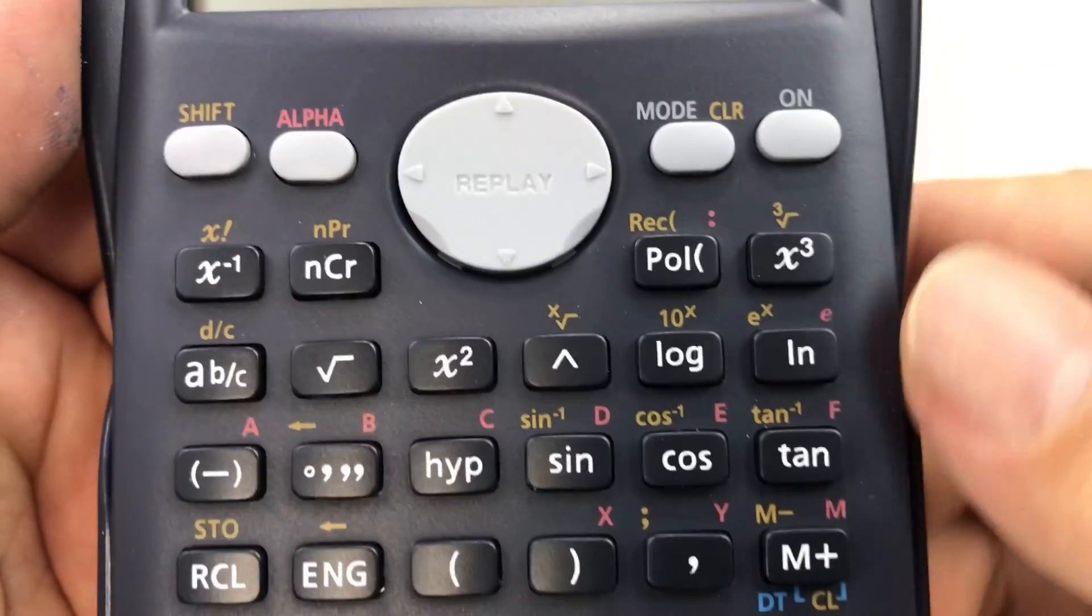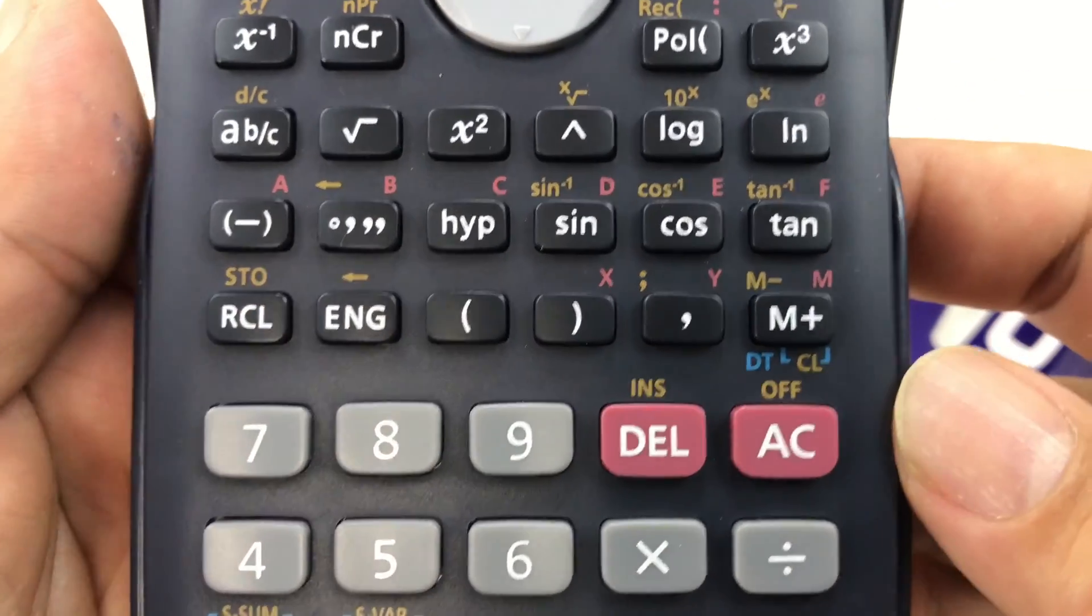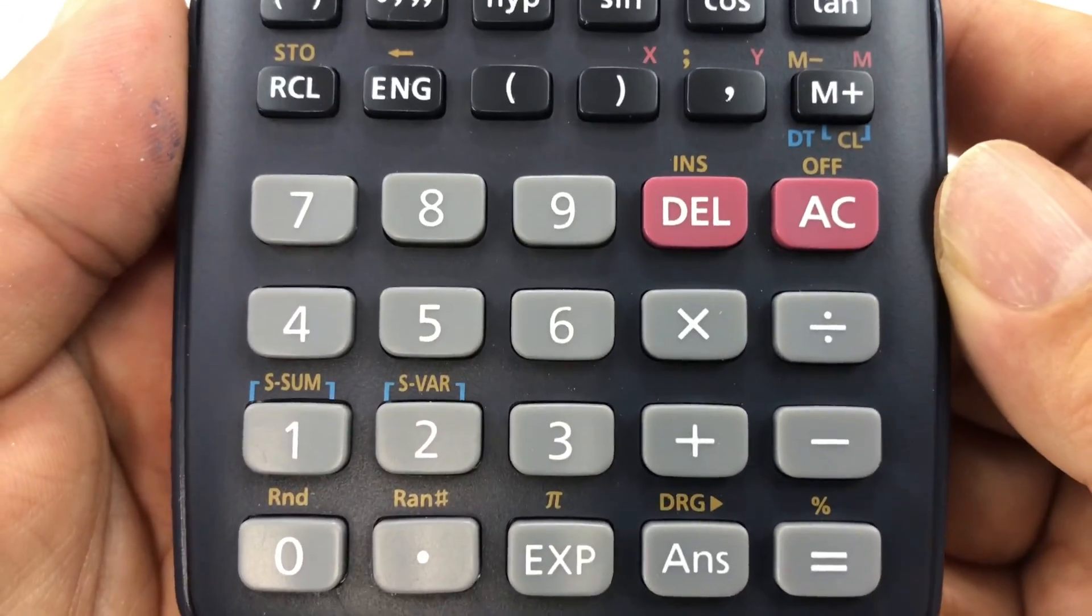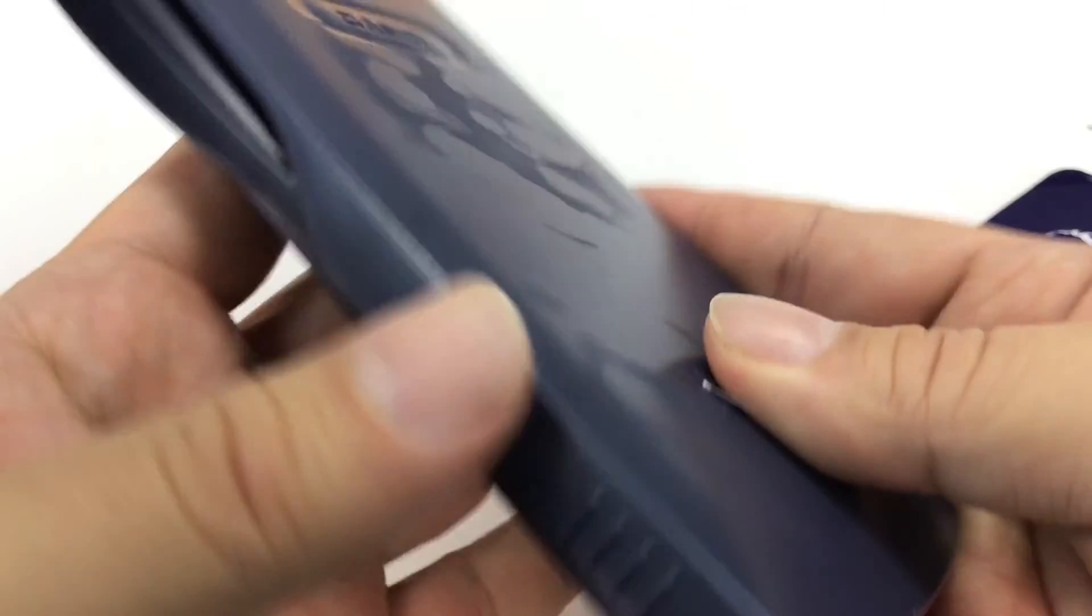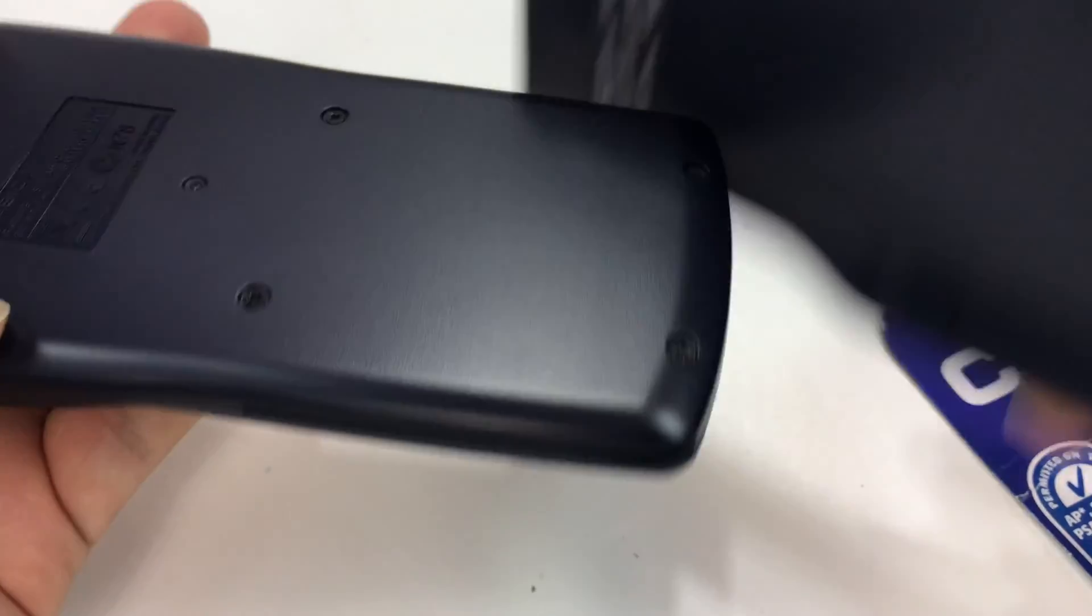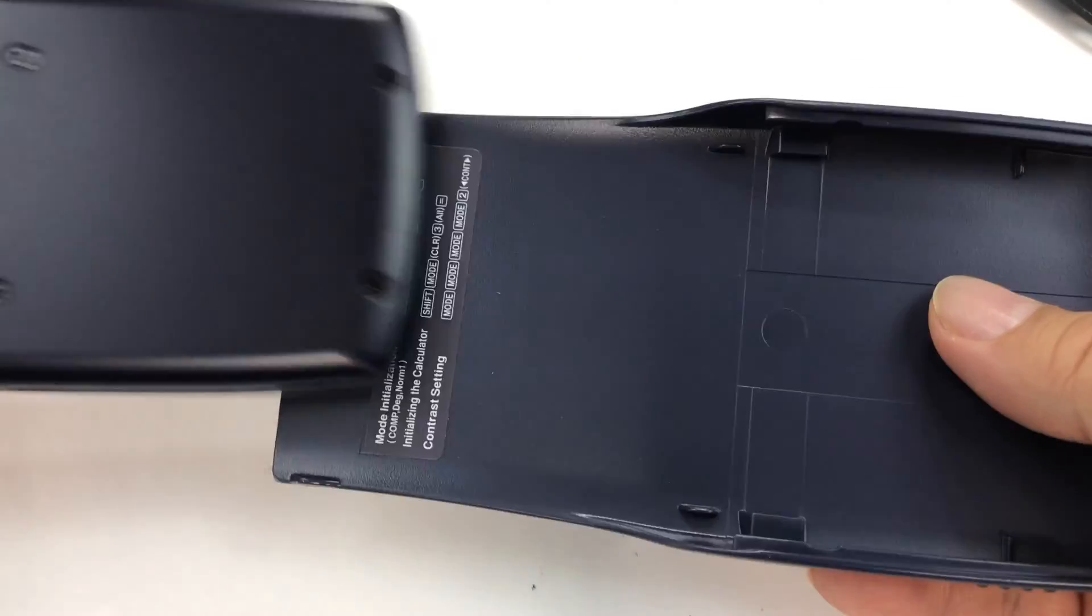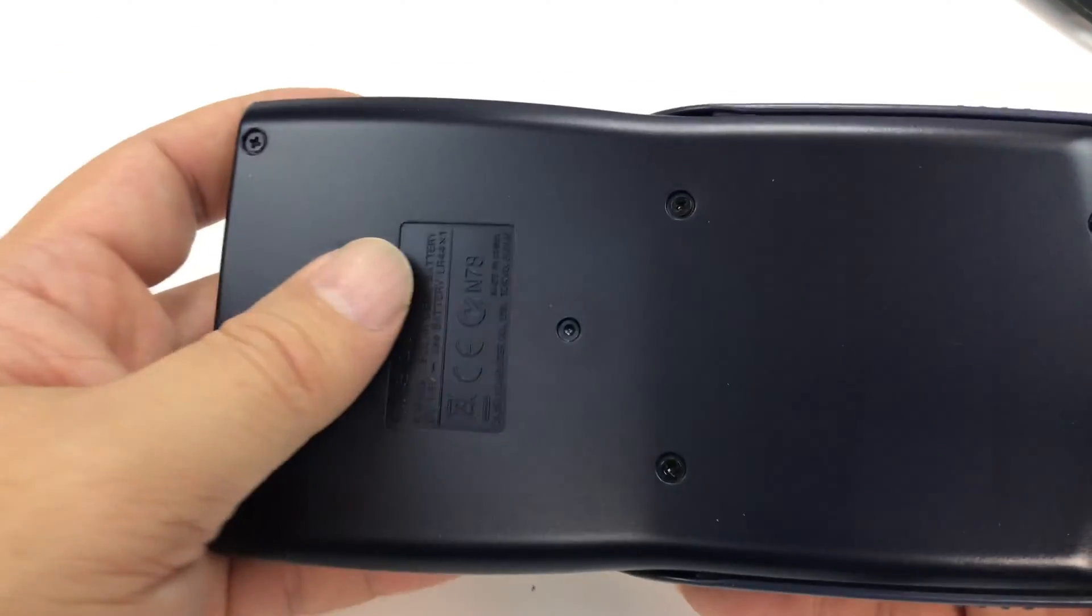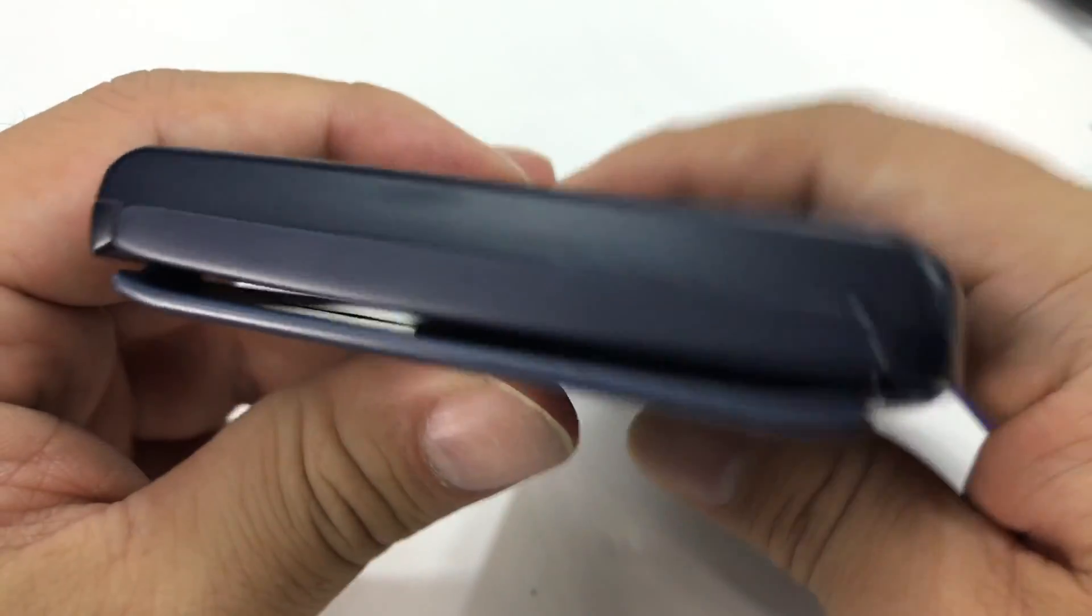So you can see all your functions, man, a lot of trigonometry functions on here. And cool. Looks like there is also a slide-off case here on the back, so you can protect the bad boy. Kind of like a Coke bottle shape. Protects the screen.